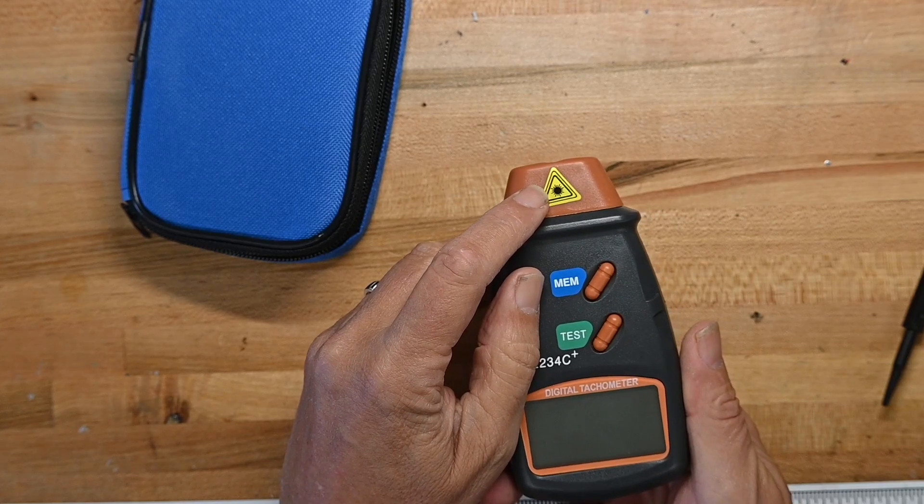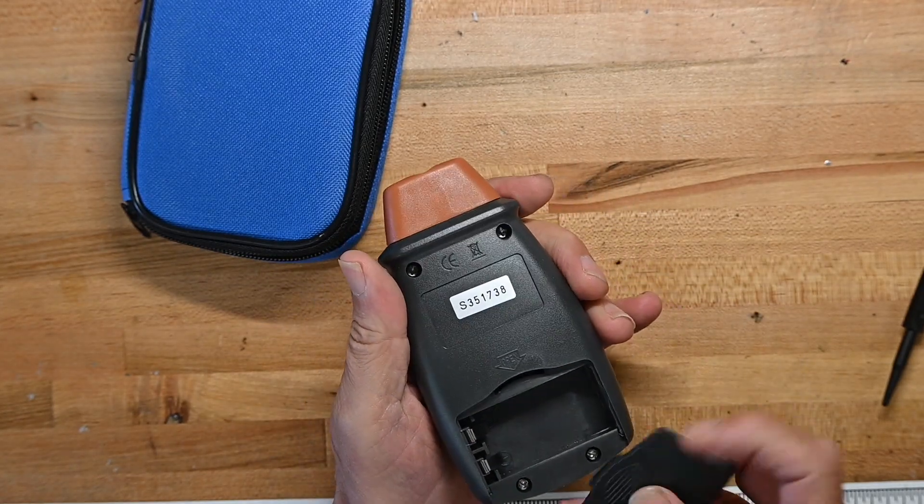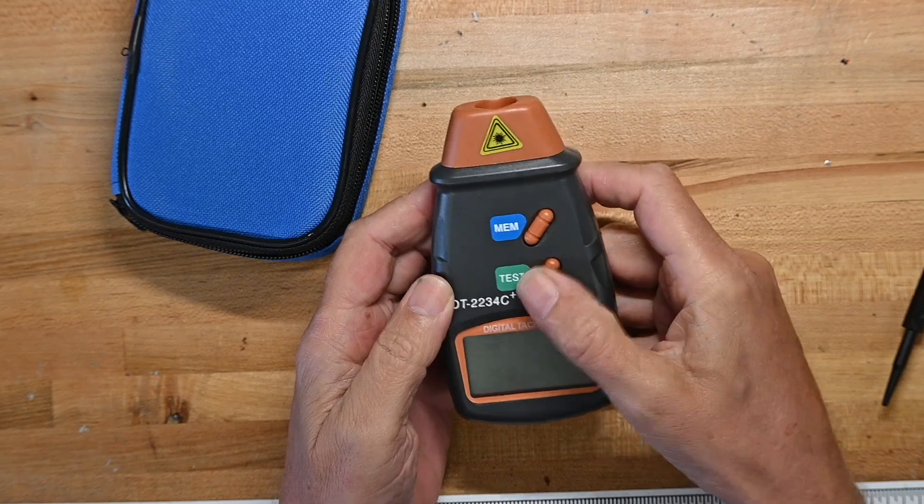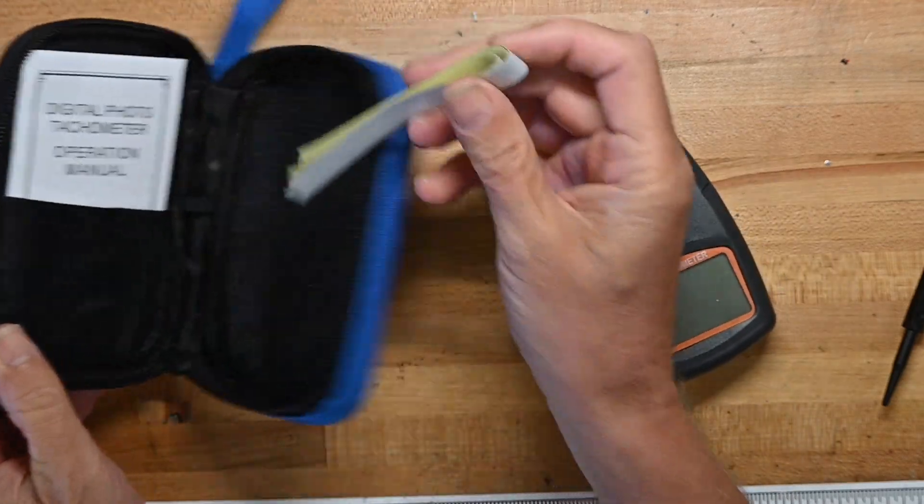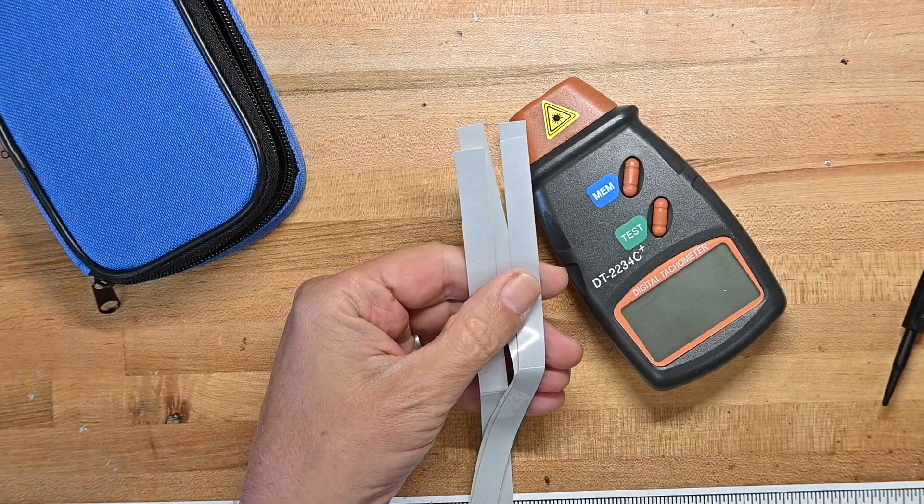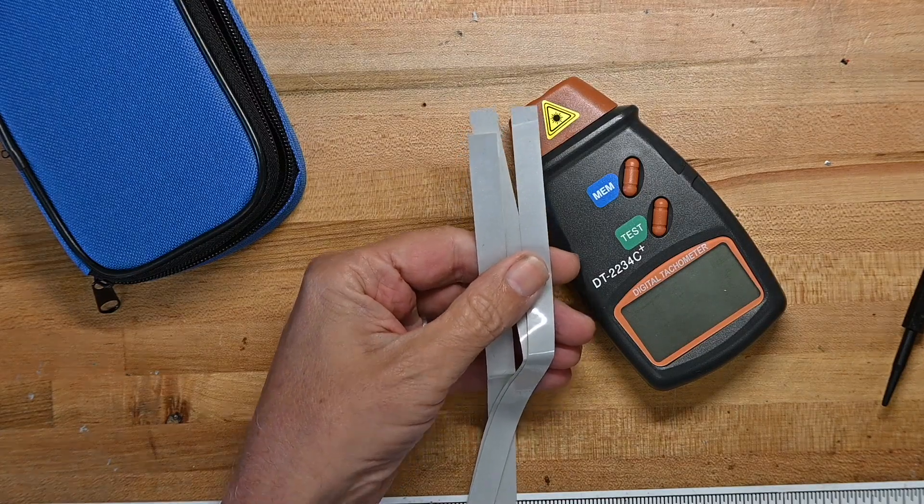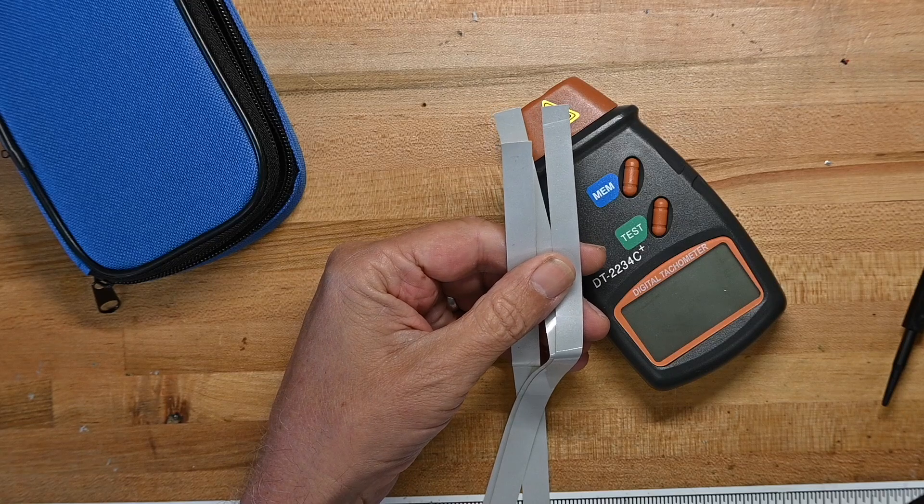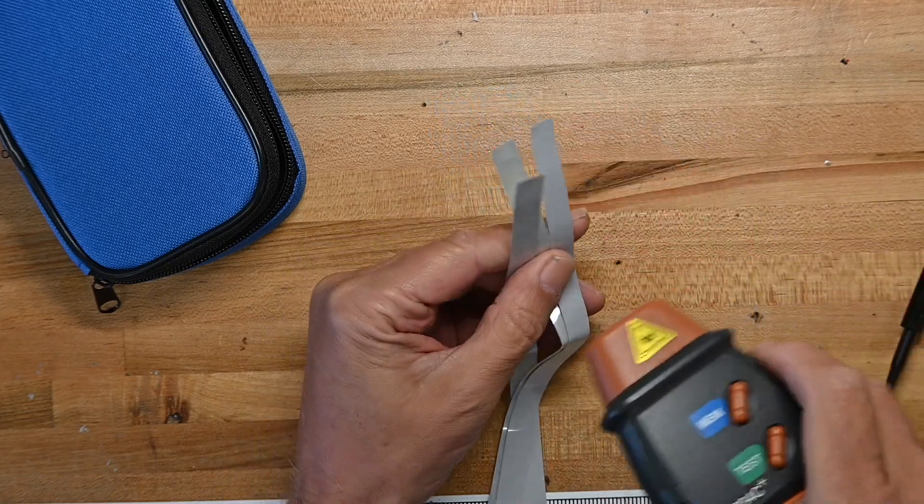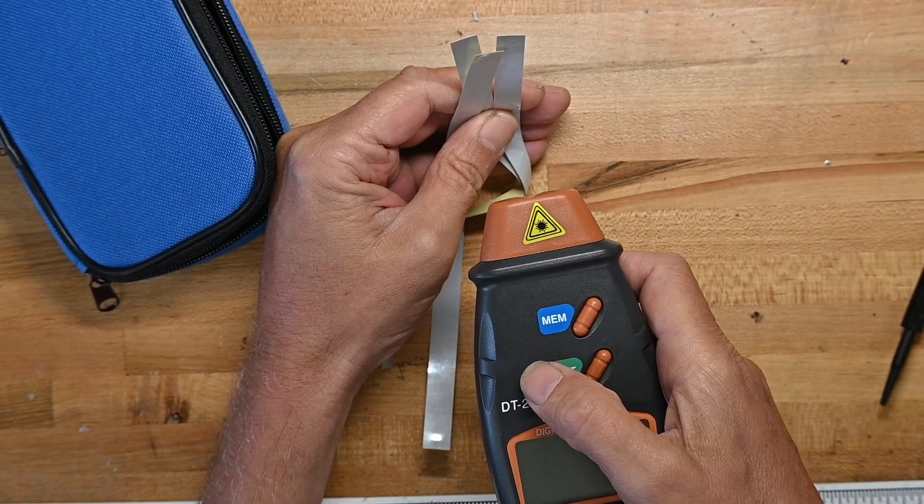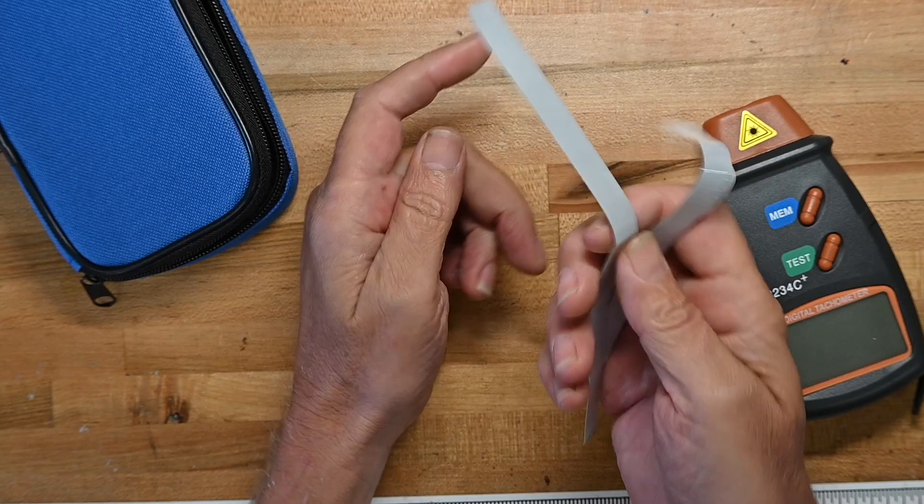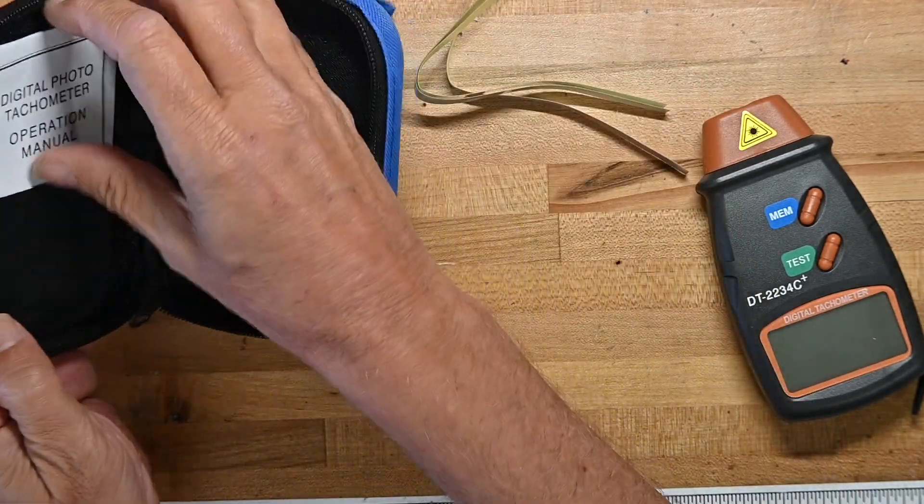So here it is. It's got a laser warning there and it takes AA batteries, which is good. Test and memory. Now here's one thing I noticed in the description. These are obviously reflective pieces of tape, and whatever you're going to measure the rotational speed of, you have to put a piece of this tape on it so the laser has something to sense against. I may try some other materials.